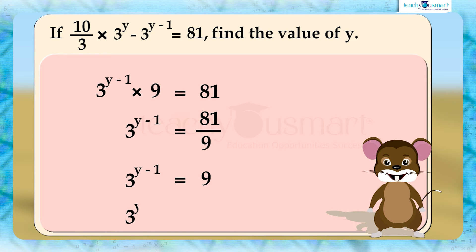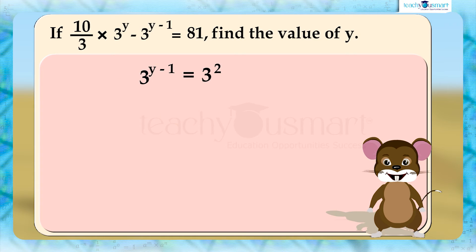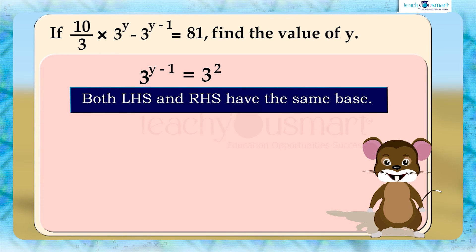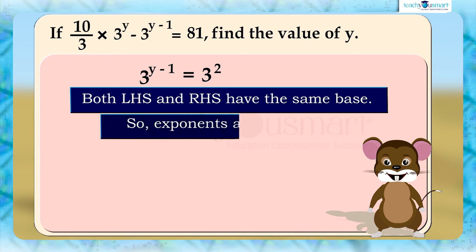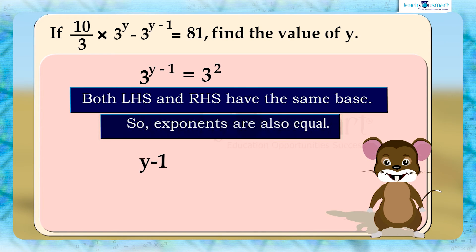We can write 9 is equal to 3 square. Then, 3 raised to y minus 1 equals 3 square. Here, both LHS and RHS have the same base, so the exponents are also equal. That is, y minus 1 equals 2. Therefore, y equals 2 plus 1, that is, y equals 3.